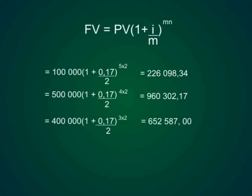In 2 years he invests 400,000 Rand so that will be 400,000 Rand open bracket 1 plus 0.17 over 2 to the power 3 times 2 which gives us an answer of 652,587 Rand.